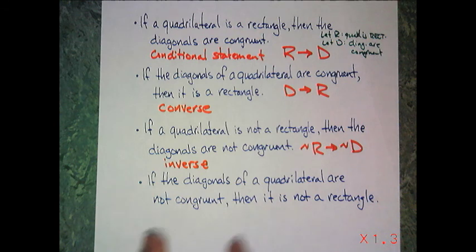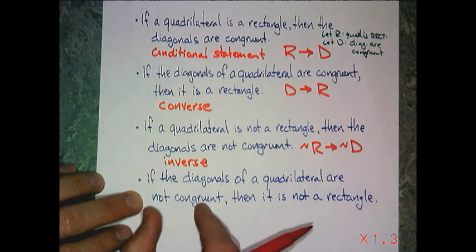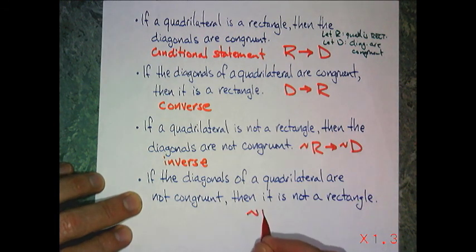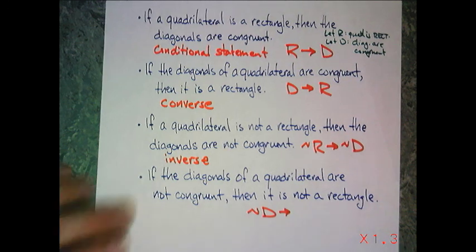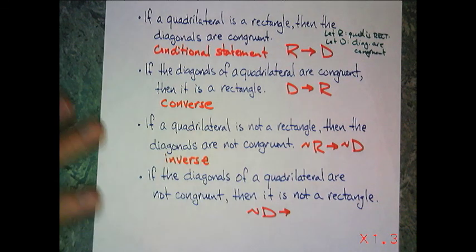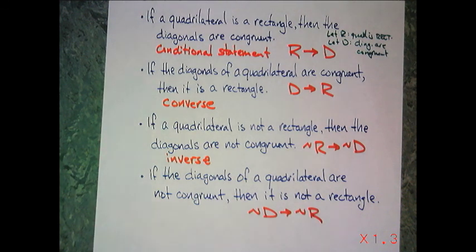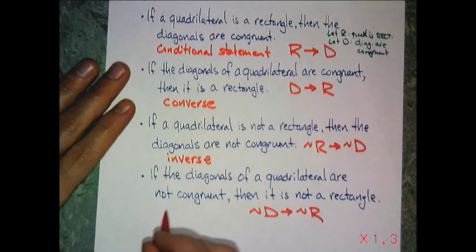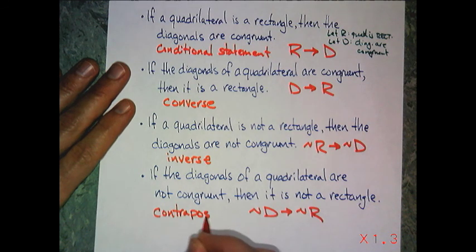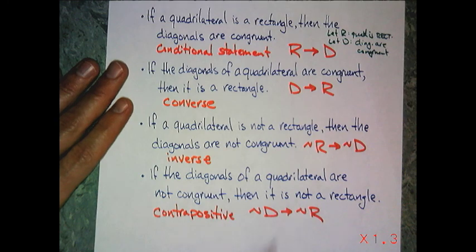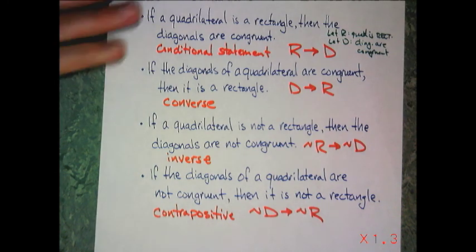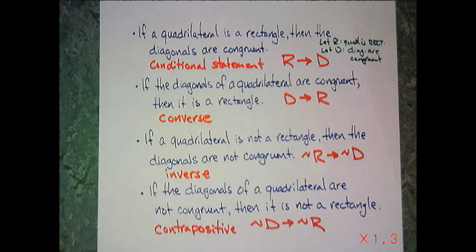And then finally, if the diagonals are quadrilateral are not congruent, diagonals not congruent, then it is not a rectangle. And this one is called the contrapositive. So yes, all of these are related. And these are the names that are associated with that.